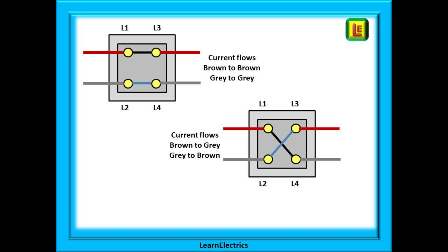As can be seen in the top drawing, current flows along the brown wire from L1 to L3 and also flows along the grey wires from L2 to L4. Different manufacturers may mark the terminals with alternative letters or numbers.